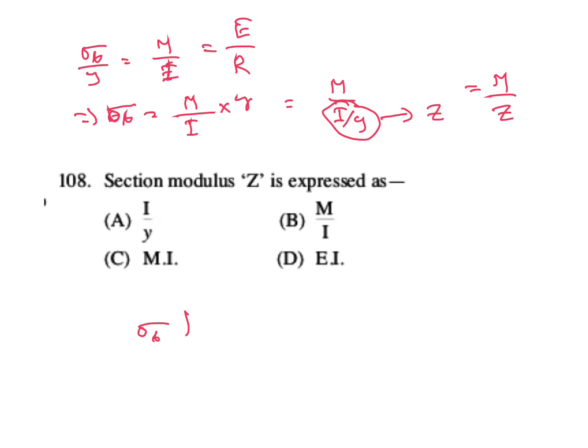So here Z should be high. That's why we are taking I section in railway track. We are using I sections because I section Z is high. It can resist bending stress.